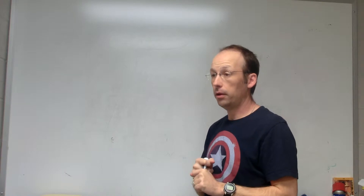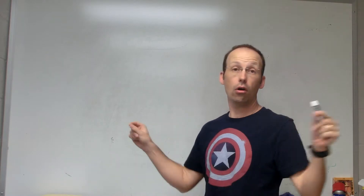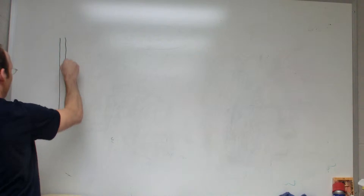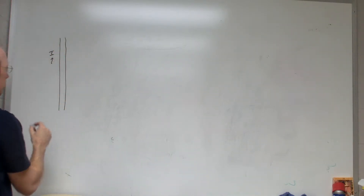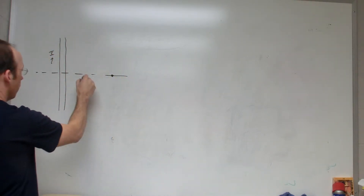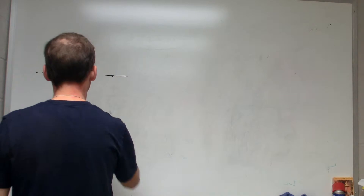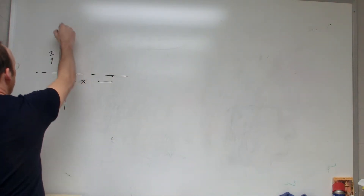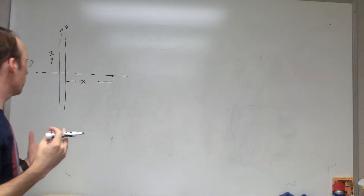I'm going to set up the integral for how to determine the magnetic field due to a long straight wire. First we need a long straight wire with current going this way, I. I want to find the magnetic field at a location — the book calls it X. That's the x-axis, that's the y-axis, and Z is into the board.